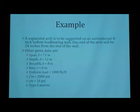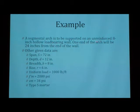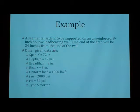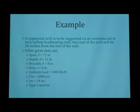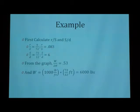Let me do an example really quick. Basically, we have a segmental arch that is supported by a fully reinforced 8-inch hollow CMU wall. One end of the arch will be 24 inches from the wall. So, given that, it's 72 inches long, 12 inches deep, it has an 8-inch breadth, it rises 6 inches, it has a uniform load of 1,000 pounds per foot, with a 2,000 psi masonry. And the allowable shear stress is 34 psi, and they're using high-bond mortar.